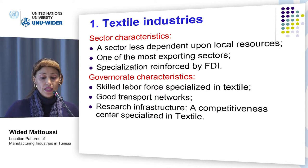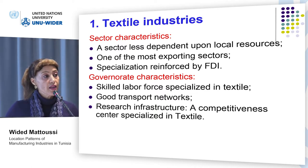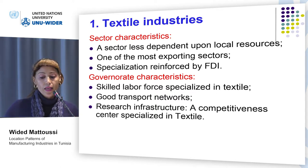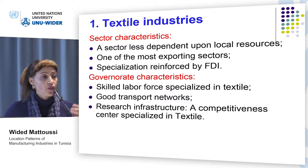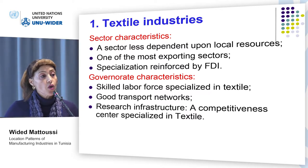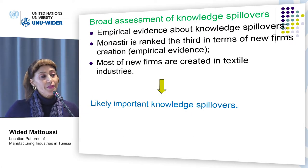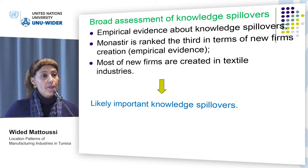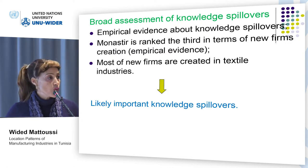The governorate of Monastir is characterized by its skilled labor pool specialized in textile due to the local transfer of knowledge from one generation to the next. It is also characterized by its good transport networks including an international airport and by its research infrastructure including a competitiveness center specialized in textile. For this sector, it may be possible to broadly assess the importance of knowledge spillovers which prevail based on empirical studies, mainly those using labor productivity-based regressions.